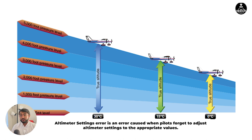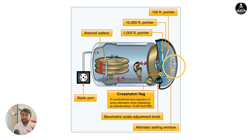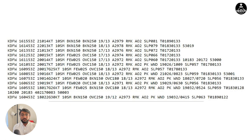Altimeter settings error is one such error that can be caused by the pilot not changing the altimeter settings when necessary. Altimeter settings are the readings that we put into the Kollsman window in order to fly correct altitudes and account for changes of pressure over place or time.